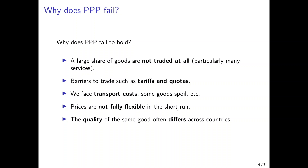Prices are not fully flexible in the short run. Even if rational buyers want to switch suppliers because they are too expensive, contracts may sometimes forbid them to switch. Suppliers themselves may not be able to change prices on short notice due to price adjustment costs and other contractual obligations. This too may lead to departures from the law of one price.